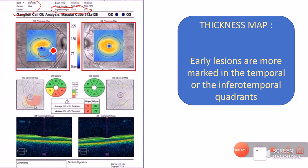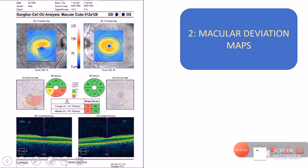Early lesions can be more markedly present in the temporal area. The inferior temporal quadrants are involved first in glaucoma because they go into the part of the neuro-retinal rim forming the inferior vulnerable zone. After calculating the macular area thickness and representing it in the macular thickness map, we compare it with the normal population to get the macular thickness deviation maps.